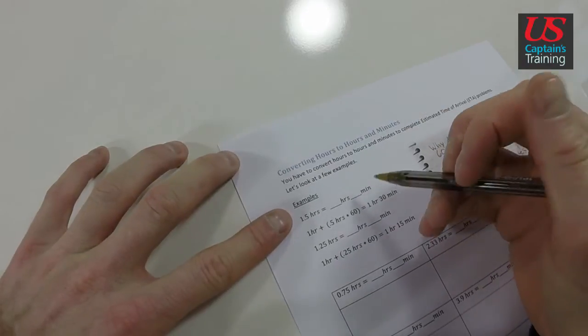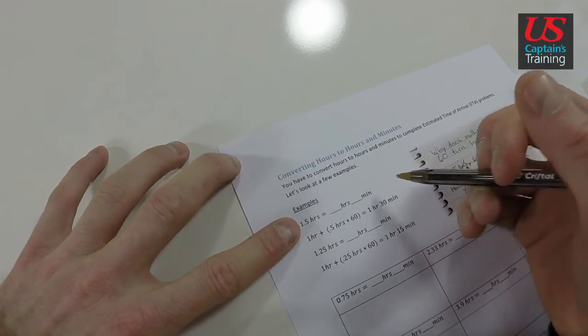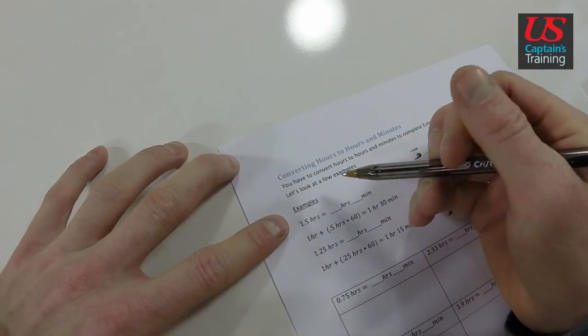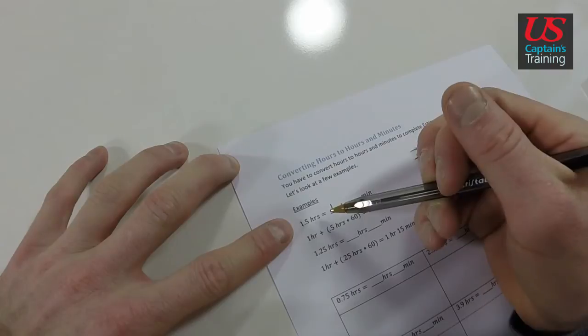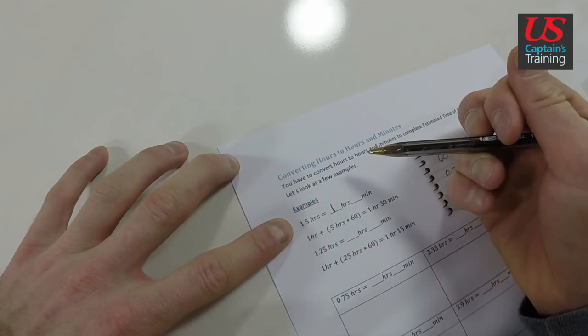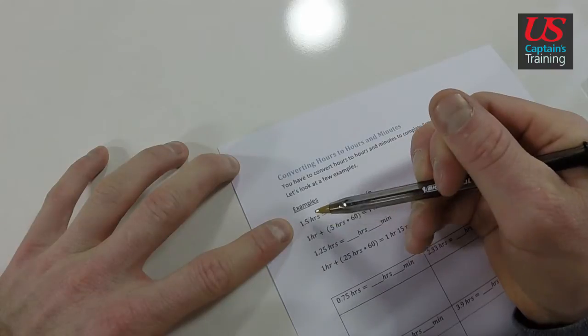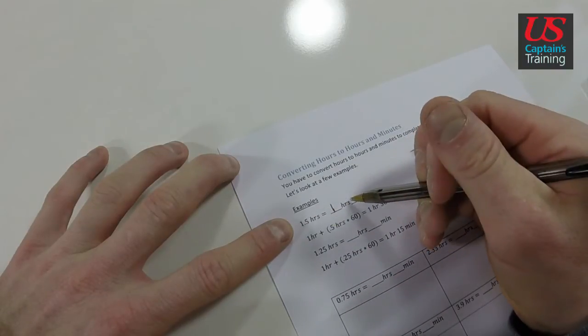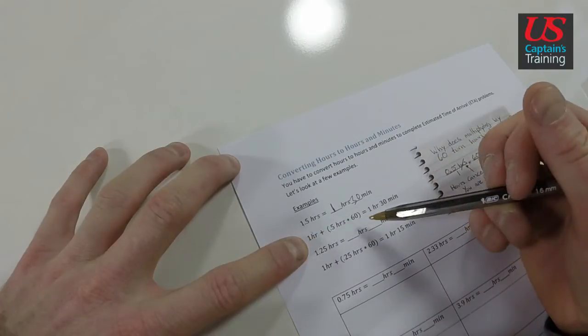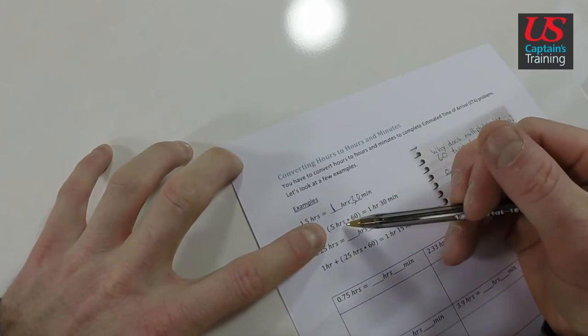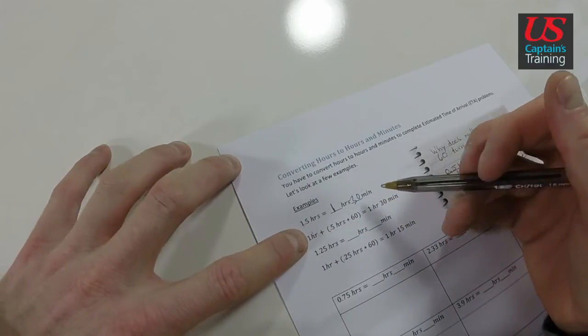Here's the first example. 1.5 hours equals how many hours and how many minutes? We take this one - this is a full hour, so one hour. 0.5 hours, that's half an hour, which you know is 30 minutes. So we just multiply 0.5 hours times 60 and we get 30 minutes. This is already one hour, and then 0.5 hours times 60 equals 30 minutes, so one hour and 30 minutes.